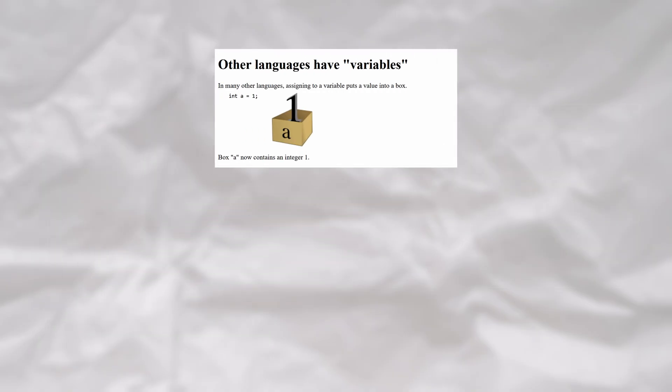In a more traditional language, if you assign the integer 1 to a variable a, a will point to a fixed memory location. You can think of this memory location as a box. In this example, that box contains the integer 1.